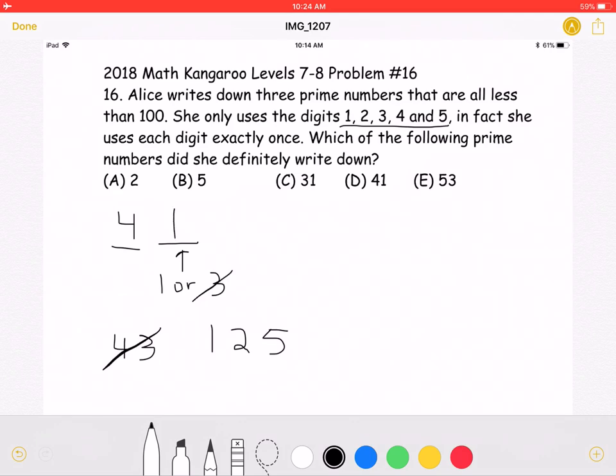If our first number is 41, the other 2 could either be 53 and 2, or 23 and 5.